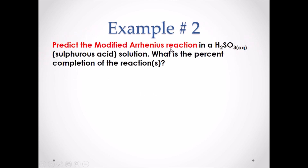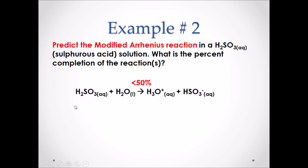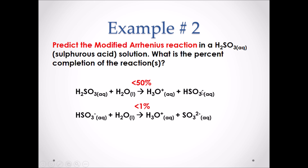Example number two: predict the modified Arrhenius reaction in a sulfurous acid solution. What is the percent completion of the reactions? Sulfurous acid is a weak acid. Acids react with water, transferring hydrogen to water, forming H₃O⁺ and HSO₃⁻. Since this is a weak acid, the products are less than 50%. Sulfurous acid has two hydrogens, so it is polyprotic. In the next reaction, HSO₃⁻ reacts with water to form H₃O⁺ and SO₃²⁻. This reaction occurs less than 1%.